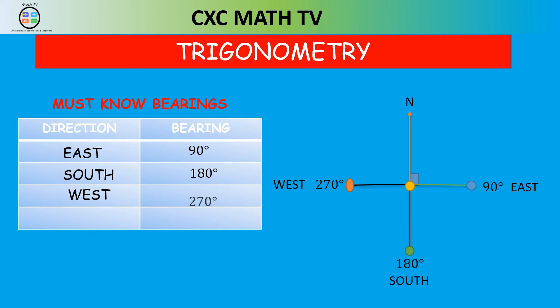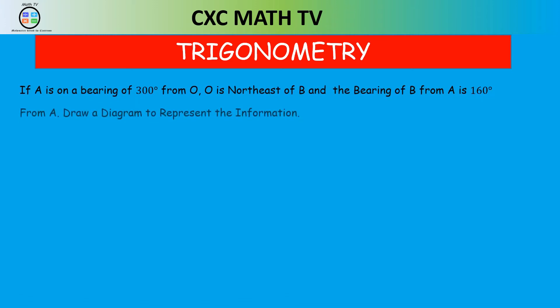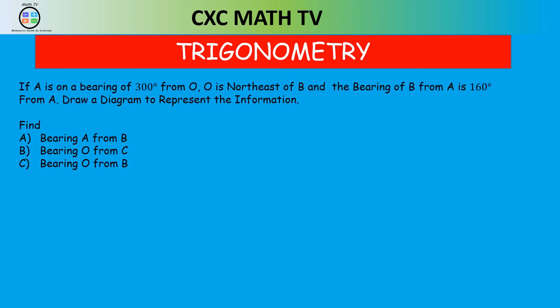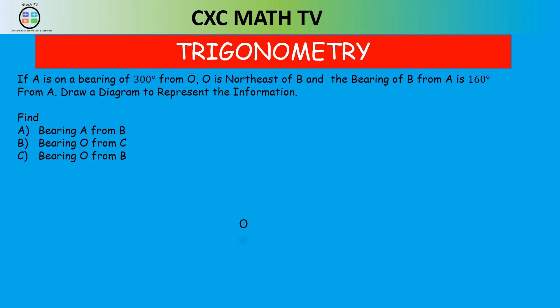Now let's look at a typical exam-style question. If A is on a bearing of 300 degrees from O, and O is northeast of B, and the bearing of B from A is 160 degrees — draw a diagram and find the bearing of A from B, the bearing of O from A, and the bearing of O from B. We start by drawing point O, then the north line from O. The bearing of A from O is 300 degrees; 270 is to the west, so we go a little above westerly to point A.